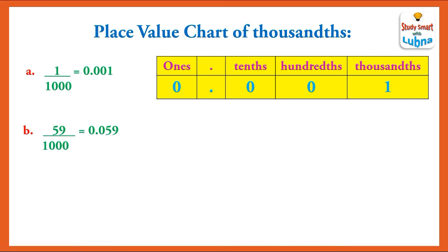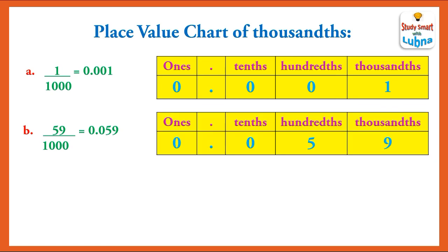59 upon 1,000 is equal to 0.059. The place value of 0 is ones, then a decimal point, the next 0 is tenths, the place value of 5 is hundredths, and the place value of 9 is thousandths.